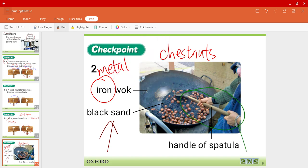The handle of a spatula is actually wood. So is wood a conductor or an insulator? Wood is an insulator. Yes, because it is a non-metal.